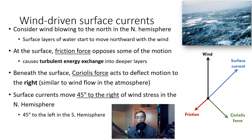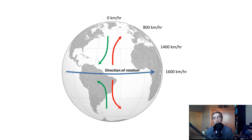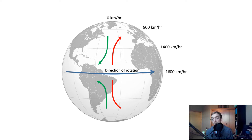Surface currents move about 45 degrees to the right of wind stress in the Northern Hemisphere, or 45 degrees to the left in the Southern Hemisphere. The Coriolis diagram shows how different speeds of rotation impact the direction and magnitude of the Coriolis effect on winds and ocean currents.